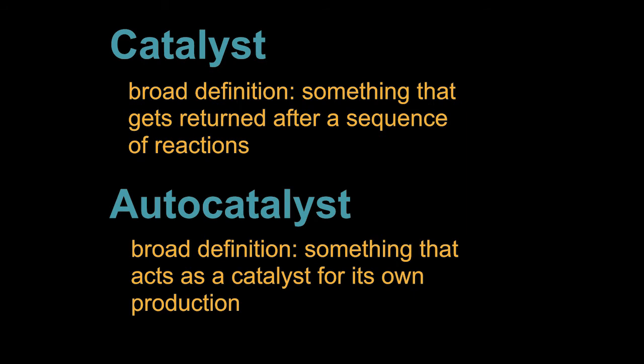In fact, one very broad definition of a catalyst might be that a catalyst is something that gets returned after a sequence of reactions. This definition allows catalysts to be something much more complicated than an enzyme, but it still has the overall property that you would expect—at least that it would speed up the overall reaction without getting consumed. An autocatalyst then, or what we call a network of autocatalysts, is something that acts as a catalyst in this particular sense, but it catalyzes its own production. We'll see a simple example of that now.